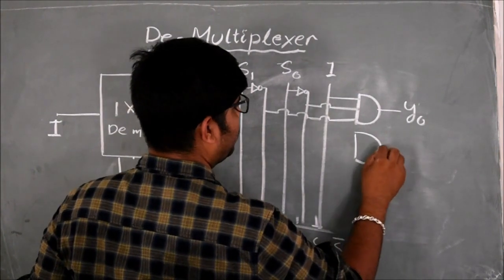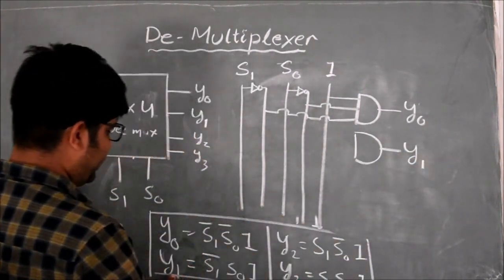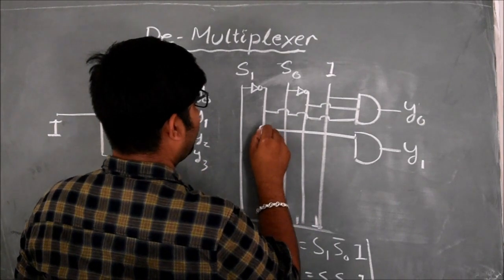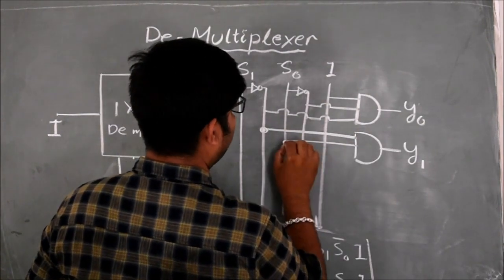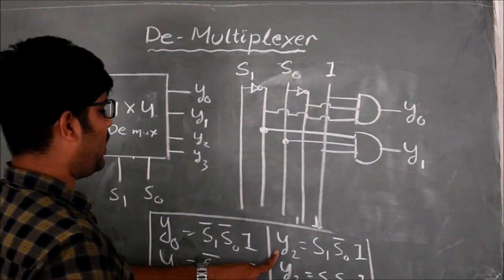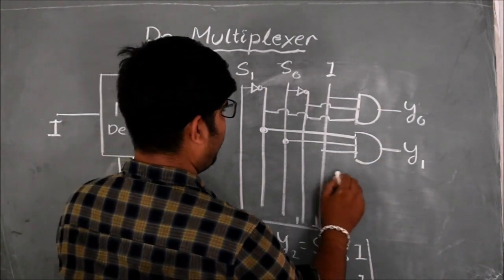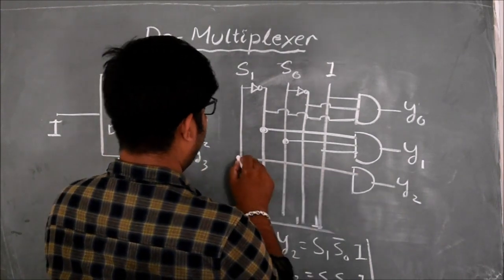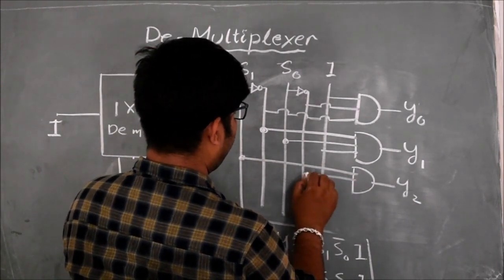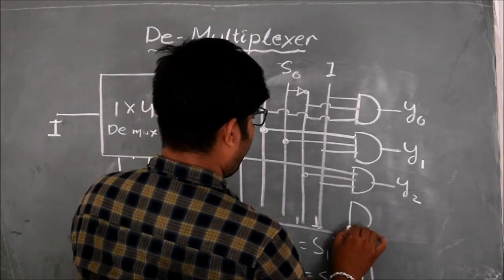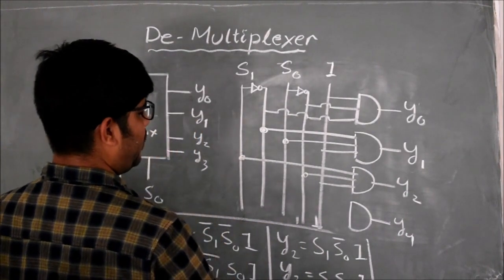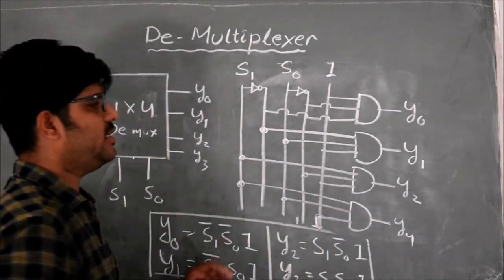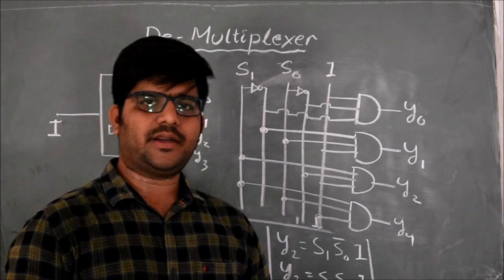Another three-input AND gate is used to design Y1: S1-complement, S0, and I. Y2 is equal to S1, S0-complement, I — inputs are S1, S0-complement, and I. And Y3 is equal to S1, S0, I — inputs are S1, S0, and I. This is the internal circuit diagram of a 1x4 D-multiplexer.